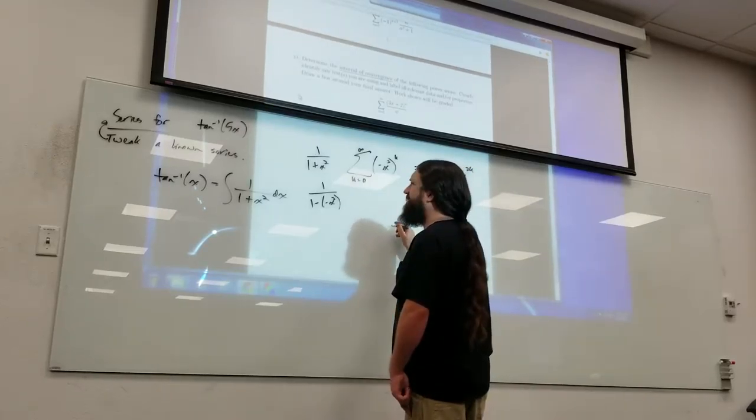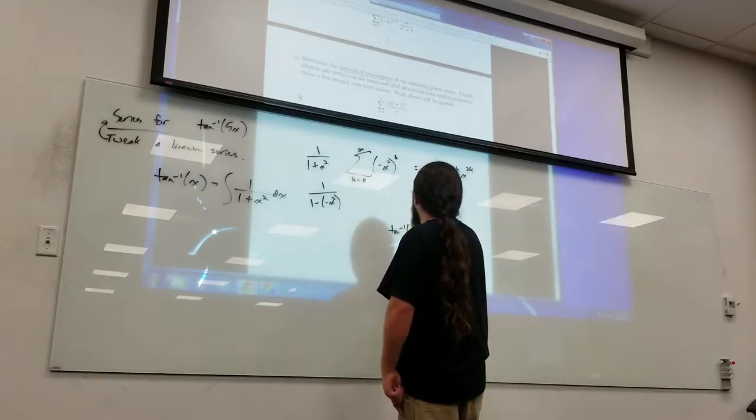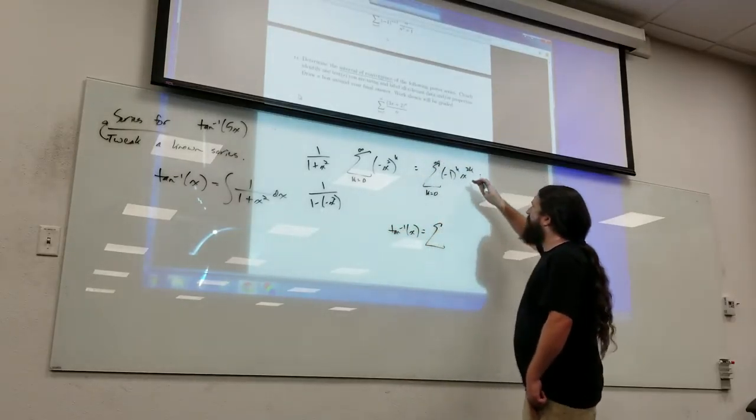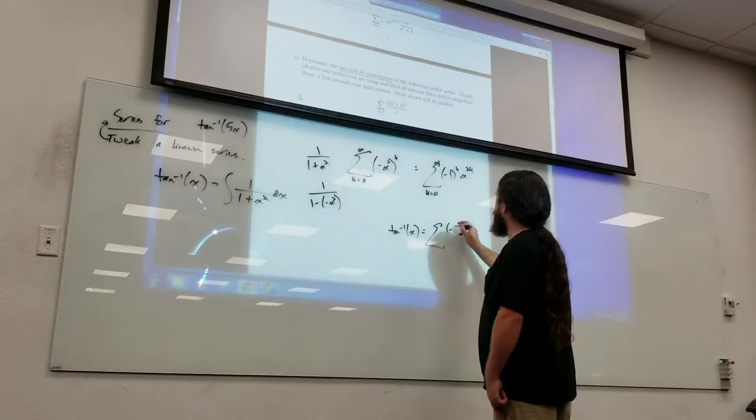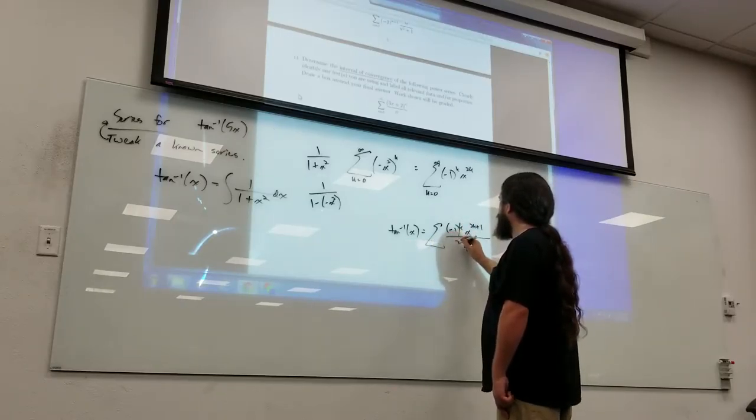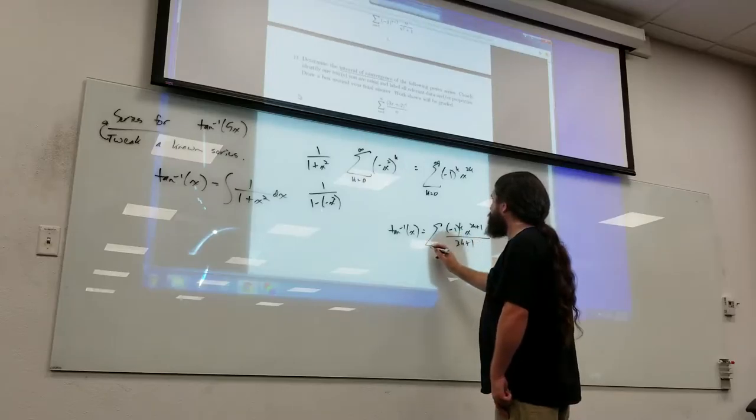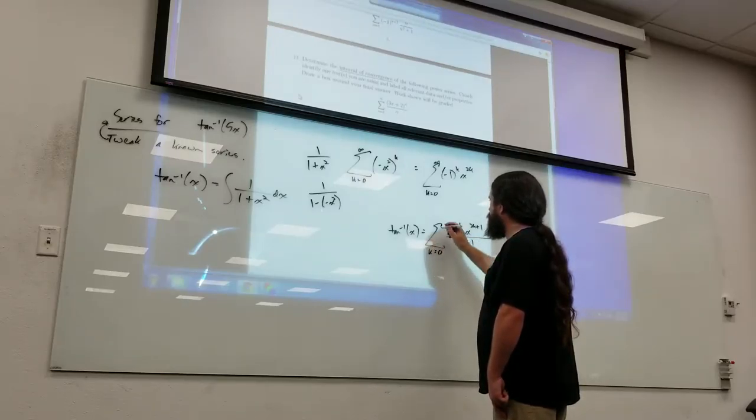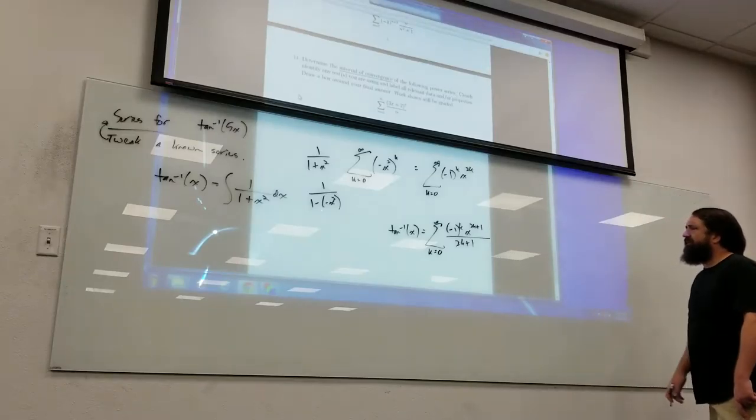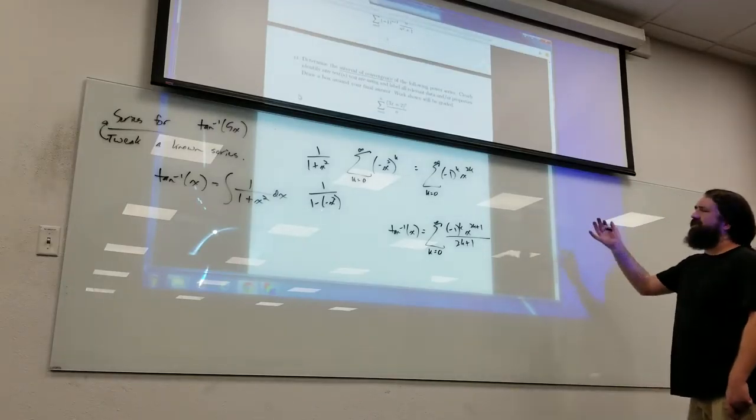And so that means inverse tangent of x, which is the integral of that, should be if I integrate this term for term, I get negative one to the k times x to the 2k plus 1 over 2k plus 1. And I think we did do that in class because we got those things with alternating odd denominators.